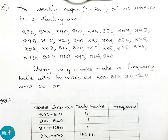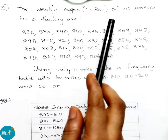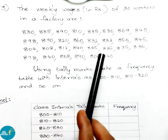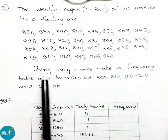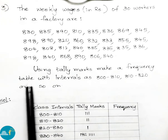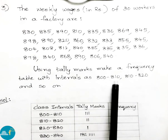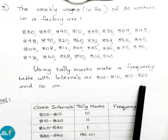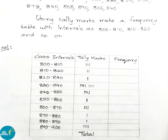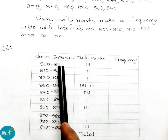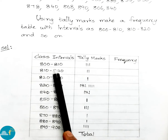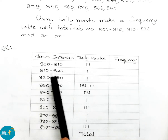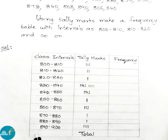Question number 3. The weekly wages in rupees of 30 workers in a factory are given. Using tally marks, make a frequency table with intervals as 800–810, 810–820, and so on. The frequency table has columns: class intervals, tally marks, and frequency. Class intervals go from 800–810 up to 890–900.